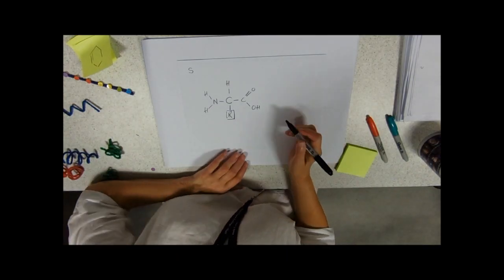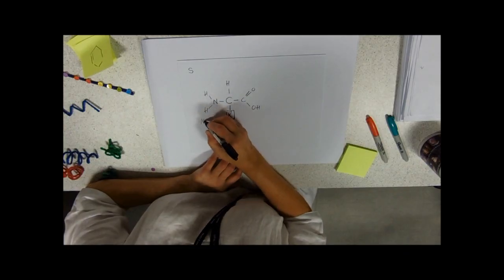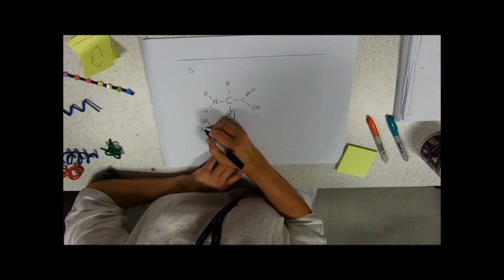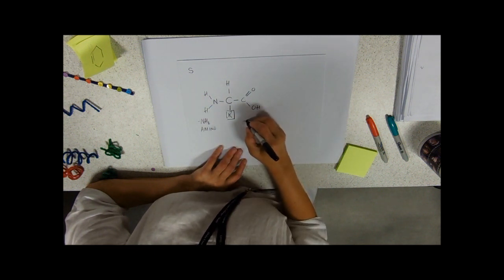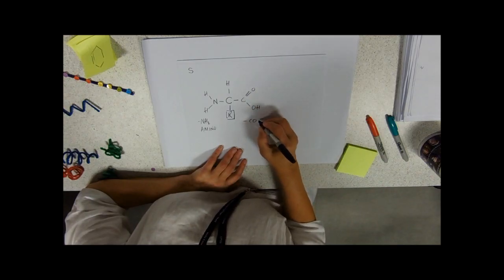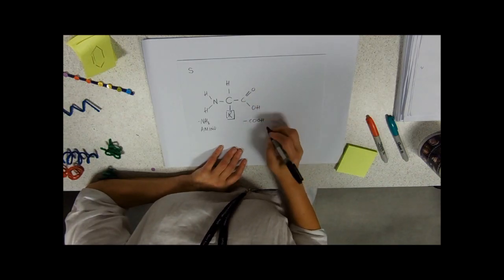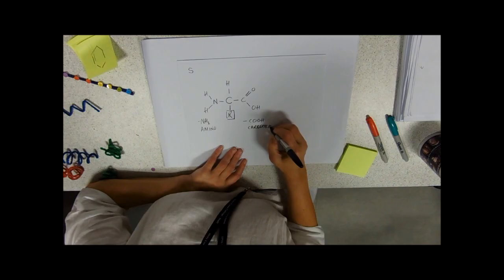So structure of an amino acid: they're called amino acids. This NH2 group is called an amino group. And you won't be shocked to know that this group COOH is the acid group. It's a carboxylic acid.